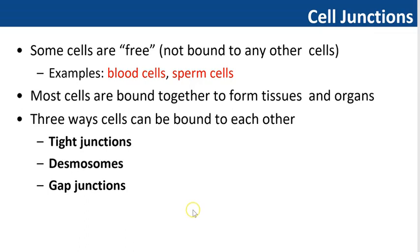So far we discussed some cell theories, then about cell diversity — how many different cells we have in our body, different in size, shape, and function, but with some similarities, as all can have plasma membrane, nucleus, and cytoplasm. Then we discussed the plasma membrane structure. Now the topic is regarding cell junctions.